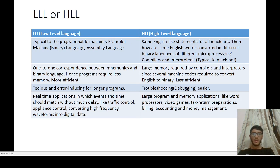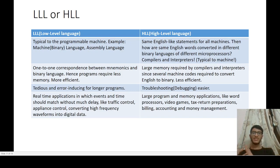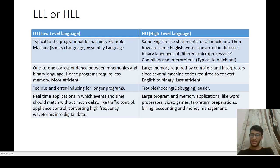High-level languages look like English-like statements and are the same for all machines. One question arises: how are the same English words converted into different binary languages of different microprocessors? Compilers and interpreters are the answer — they are specific to the machine and convert a common high-level language into different binary languages for different microprocessors. Low-level languages have a one-to-one correspondence between mnemonics and binary language, hence programs require less memory and are more efficient. High-level languages require more memory due to compilers and interpreters, since several machine codes are needed to convert English to binaries, making them less efficient.